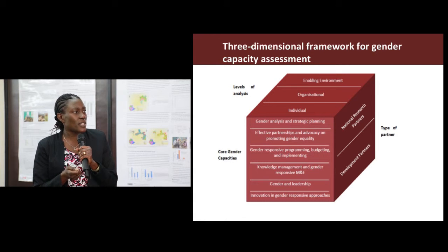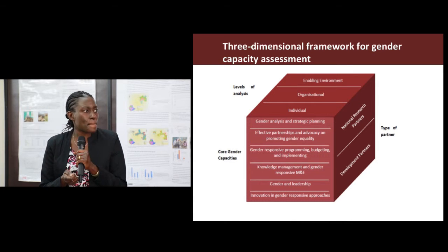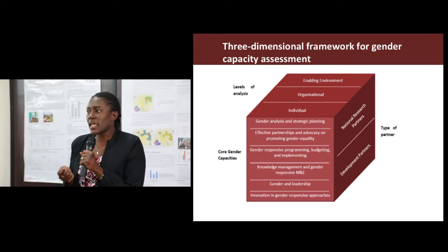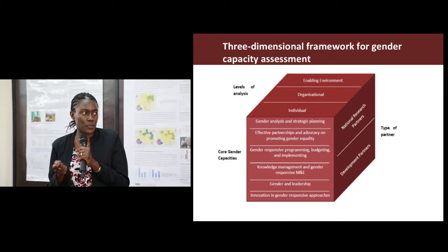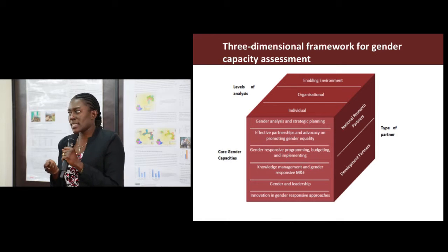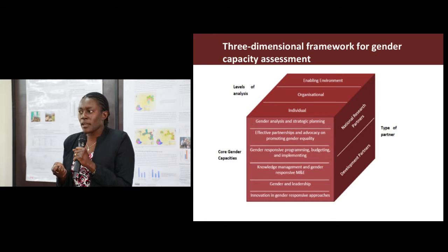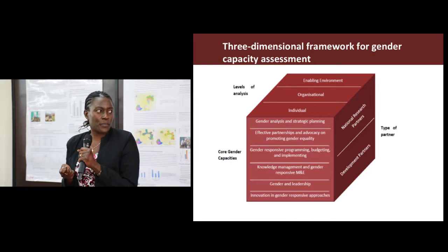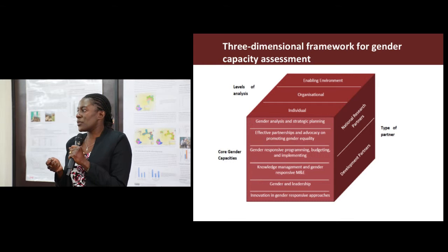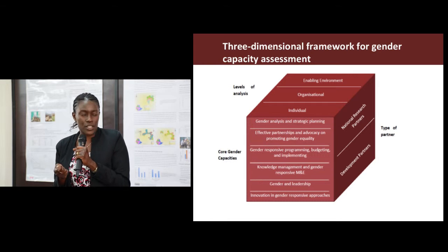Then the other core gender capacity is gender-responsive programming, budgeting, and implementing. Here we look at the gender responsiveness of the different interventions that different organisations have in place — to what extent are they gender responsive? Are they addressing the interests or the needs of men and women? And are there resources, for example budgets, specifically allocated to gender-related interventions?